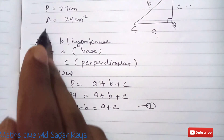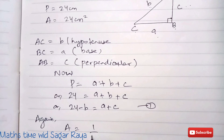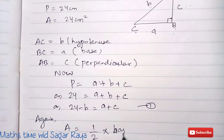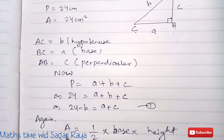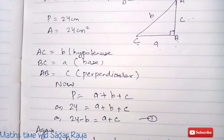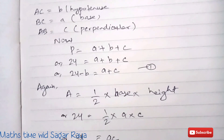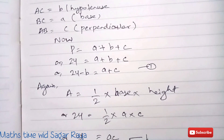Area is also given as 24 cm². Using the formula: area of a triangle = ½ × base × height. Here base is a and height is c, so: 24 = ½ × a × c. Multiplying both sides by 2: 48 = a·c. Let this be equation 2.